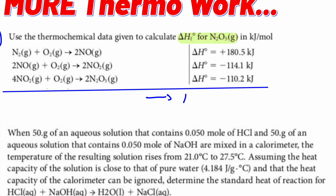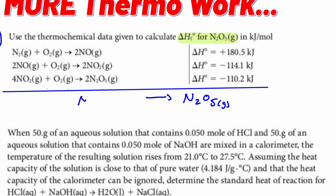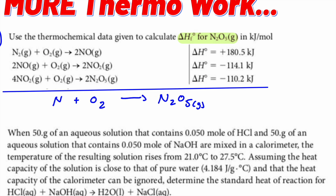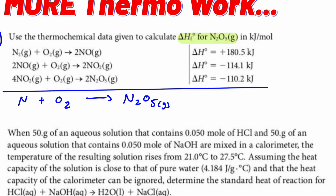What is the enthalpy of formation of N₂O₅? It's making one mole of the compound from its elements. If you write NO or NO₂, that's not correct — it comes from its elements. A formation equation is adding its elements together. In normal standard states, those are both diatomics: N₂ and O₂.